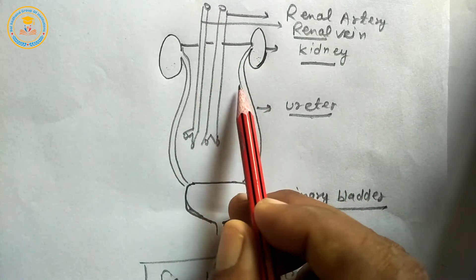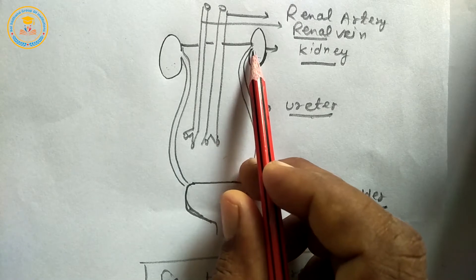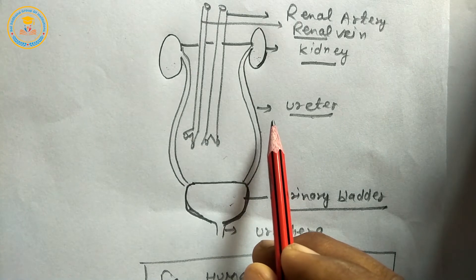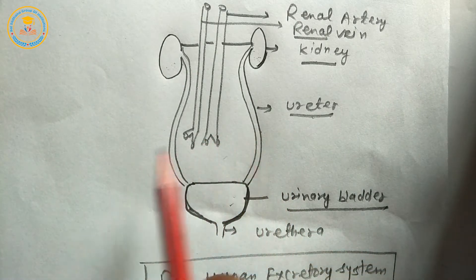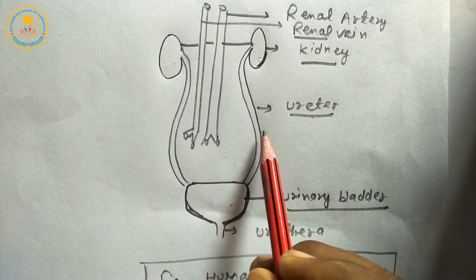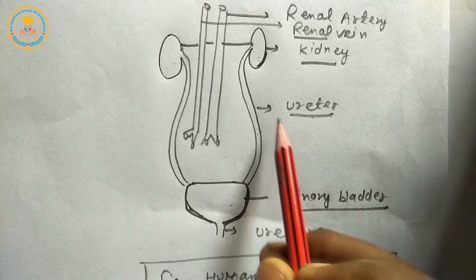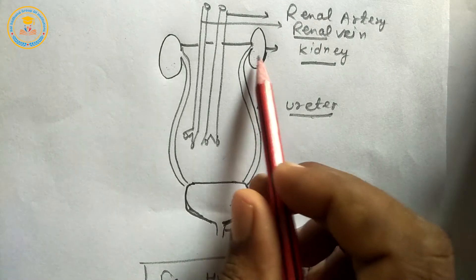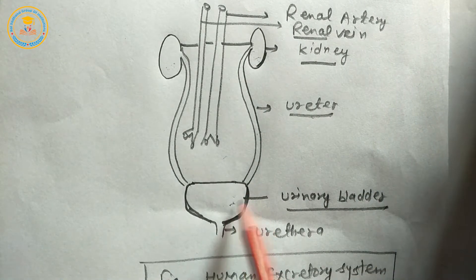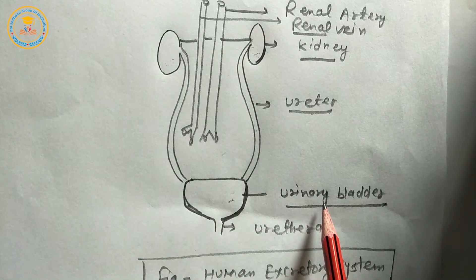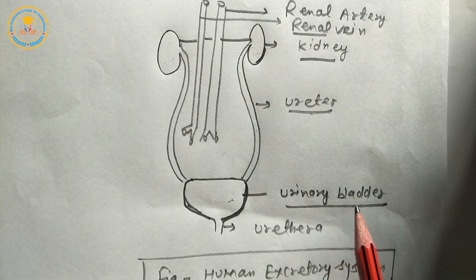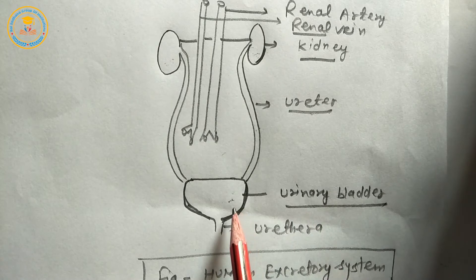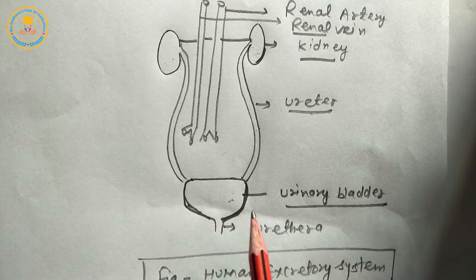Renal artery, renal vein, ureters, and nerves enter into the kidney through the hilum. Next: ureters — accessory excretory organs. Number: one pair, meaning two. Shape: tubular. Location: between kidney and urinary bladder. Function: to receive urine from kidney and transfer to urinary bladder. Third is urinary bladder — accessory excretory organ. It is a muscular organ. Function: to store urine as a temporary form.